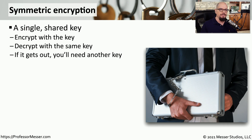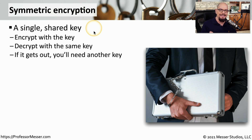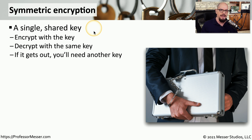Let's begin our conversation about the differences between symmetric encryption and asymmetric encryption by focusing first on symmetric encryption. This is encryption where you use a single key to encrypt the data. And when you want to decrypt the data, you use exactly the same key to decrypt it. This means that if this key becomes available for others to see, you'll have to completely redo all of your encryption, because now everyone has a copy of the key that can be used to decrypt this data.